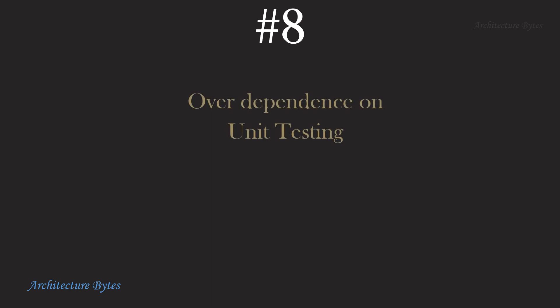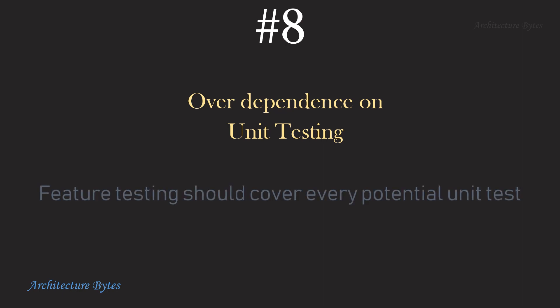At number 8: over-dependence on unit testing. Have you come across a project where all unit tests were green, but the application was full of bugs and basic use cases were failing? This happened because focus had shifted from making features work to making functions green, and an excessive amount of time was spent on this. Don't get me wrong — unit test cases are useful but they have limitations. Your primary focus should be feature testing, and your function-level tests should automatically be covered by the feature tests.